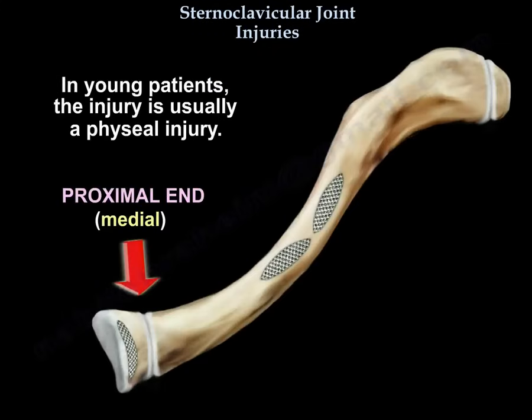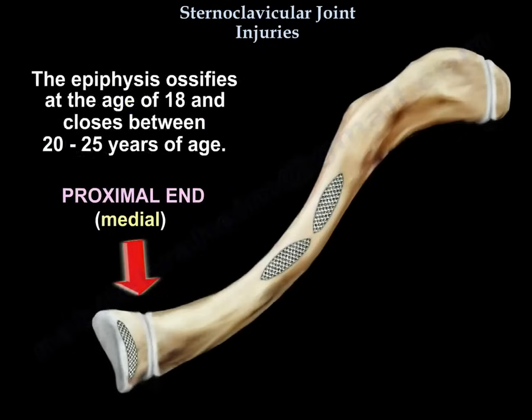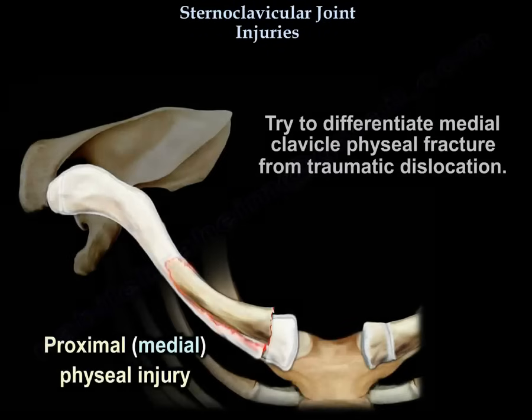In young patients, the injury is usually a physeal injury. Medial clavicle physeal fracture occurs in patients less than 20 years old. The epiphysis ossifies at the age of 18 and closes between 20 to 25 years old. Try to differentiate medial clavicle physeal fracture from traumatic dislocation.